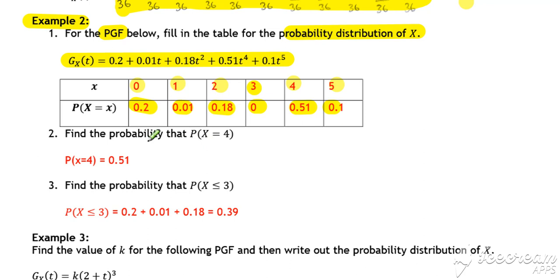To finish the example, if we want to find the probability that x is equal to 4, we can just pick it straight off from either our coefficient or from our table. The probability that x is less than or equal to 3 is the sum of this one, this one, and this one, so 0.39.